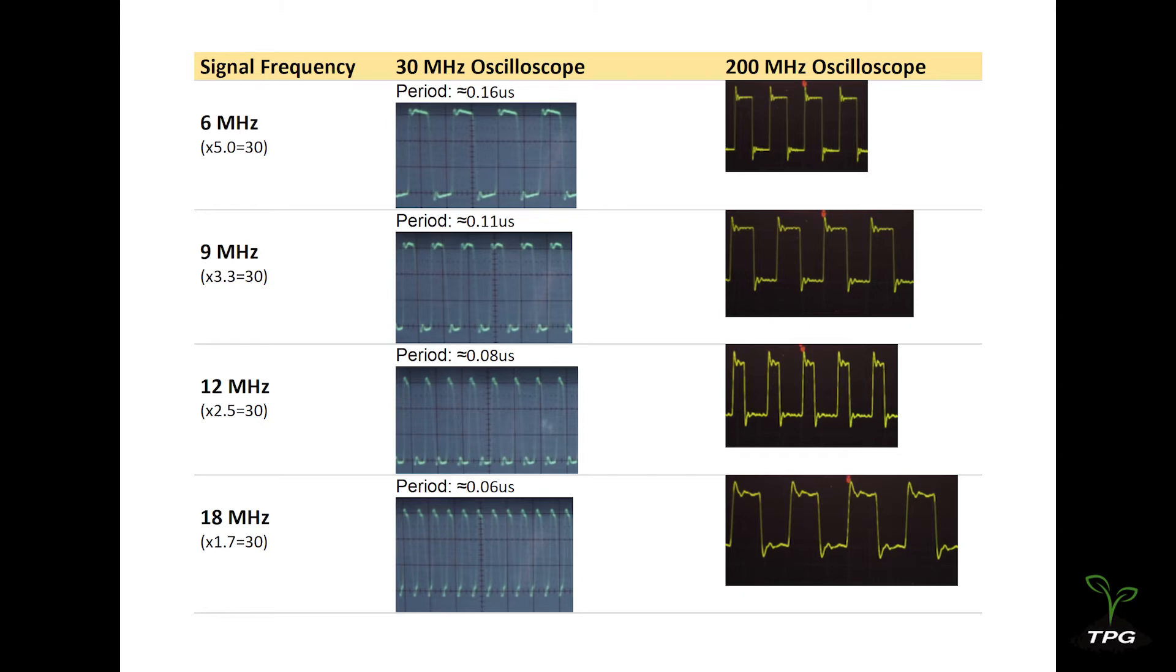In this test, for the 6 MHz square wave input signal, the output looks like a square wave. For the 9 MHz square wave, the output still looks like a square wave.